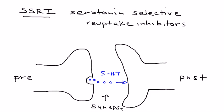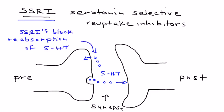Some of this serotonin comes back and gets reabsorbed into the presynaptic area. What SSRIs do is they block that reabsorption. If the reabsorption is blocked, that means more serotonin is available in the synapse.